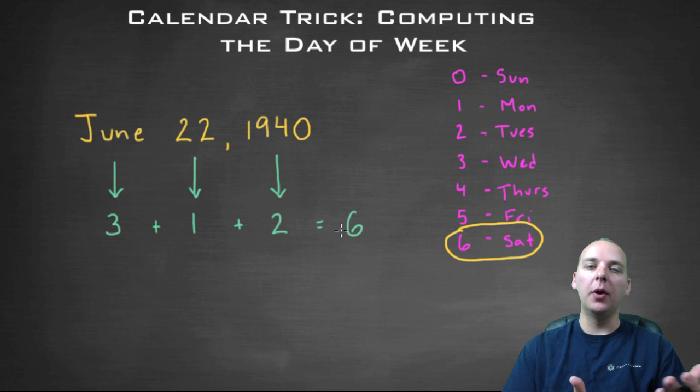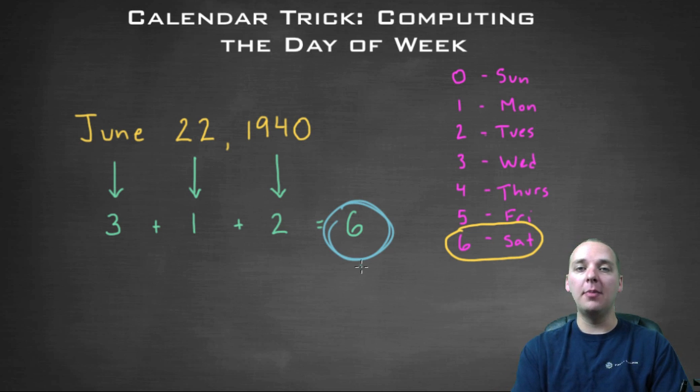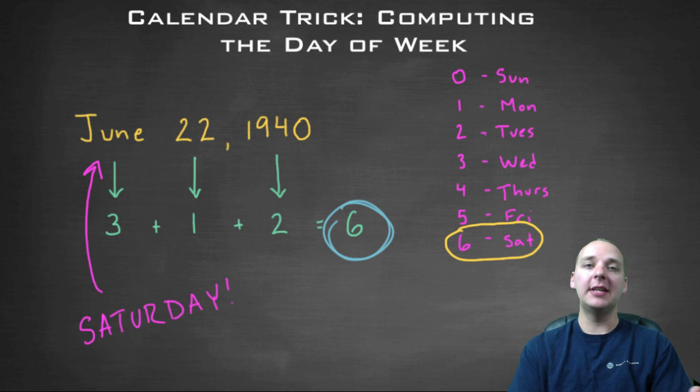Sunday is going to be a zero. Monday is going to be a one. Tuesday is a two. Wednesday is a three. Thursday is a four. Friday is a five. And Saturday is a six. So when you get a six for your sum, like we did here, what that means is that June 22nd, 1940 was on a Saturday.